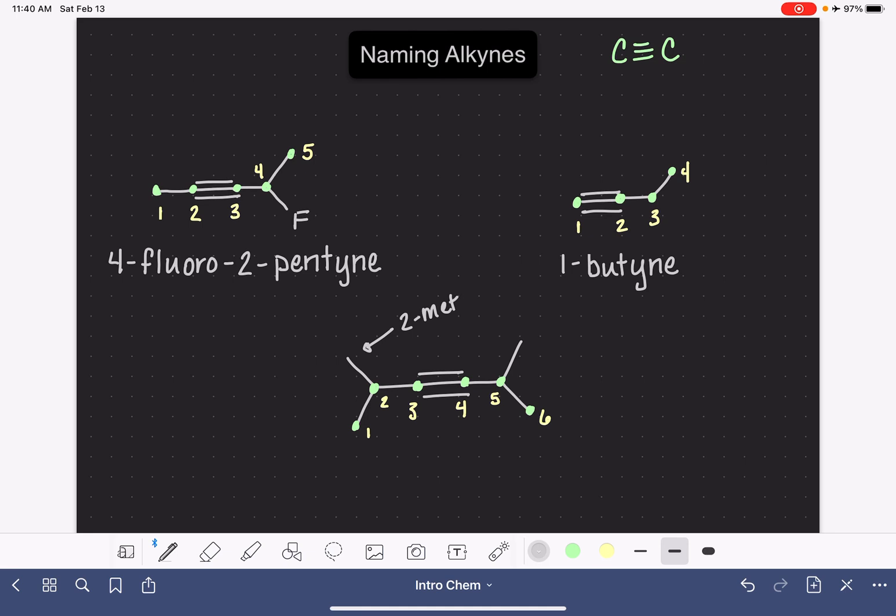We have a two-methyl and we also have a five-methyl. When we have two identical substituents, we don't have to say two-methyl five-methyl. We don't have to say methyl methyl. We can say dimethyl. That lets everybody know that there are two of them. Although we do still have to use the numbers for each. So we say two comma five dimethyl. This is a shorter way of saying two-methyl five-methyl.